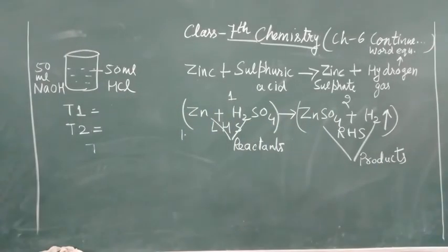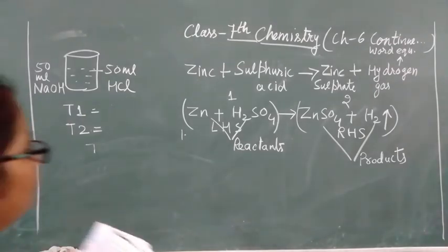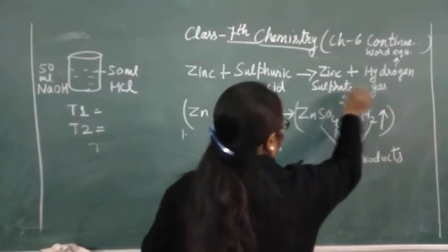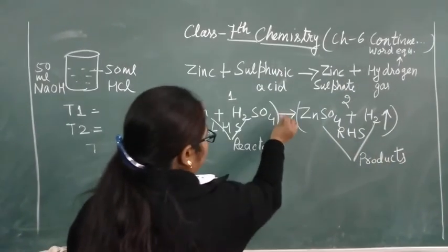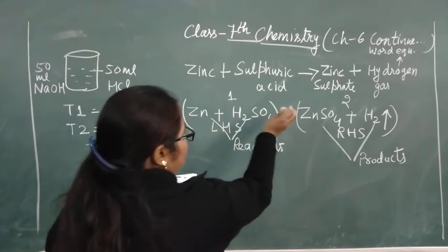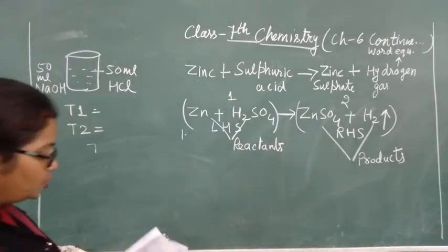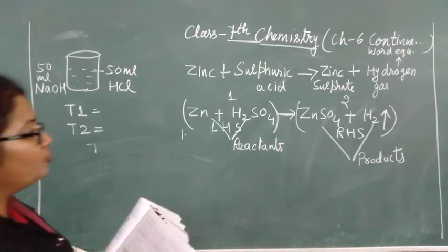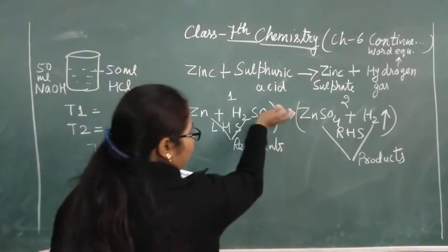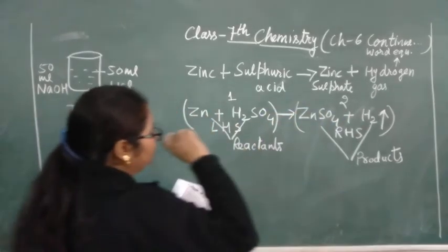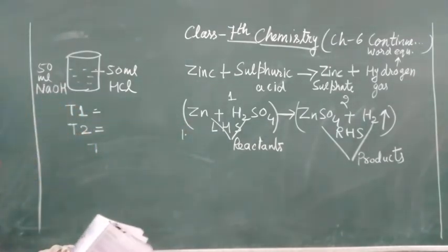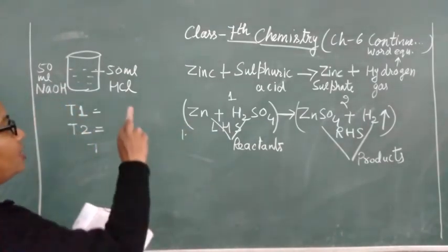The third information is that the formation of the product is shown by the arrow pointing towards them. This arrow should be pointing towards the product side. So these are the three pieces of information which we get with the help of a chemical equation.